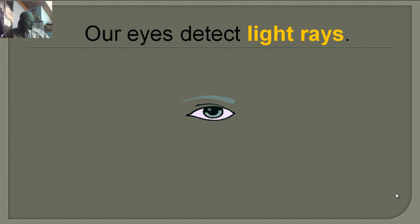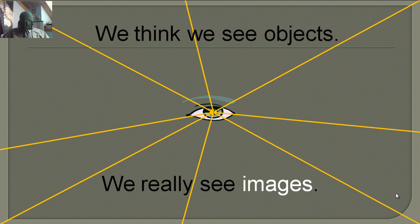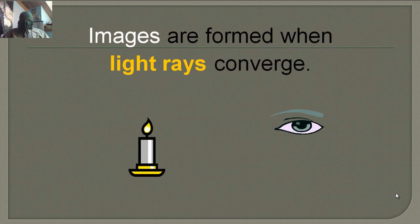Our eyes detect the light rays. All those light rays go in through the lens in our eye. We think we see objects, but what we really see are images — we're just seeing the projection of that object, which is an image.